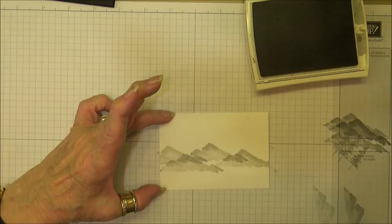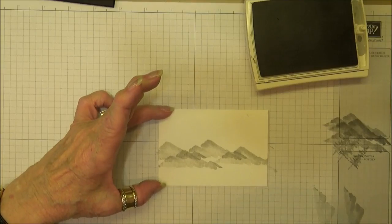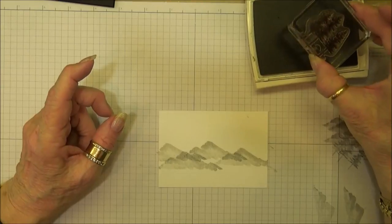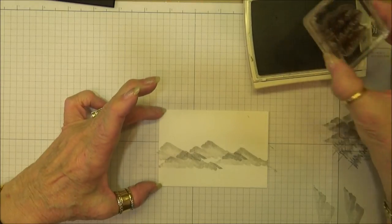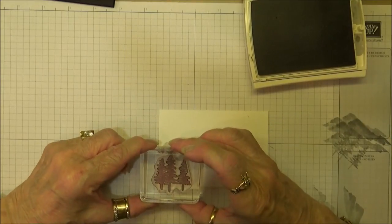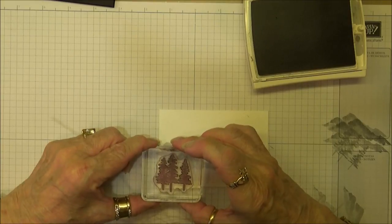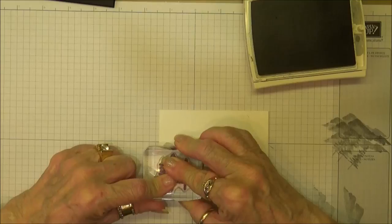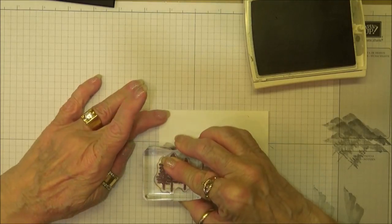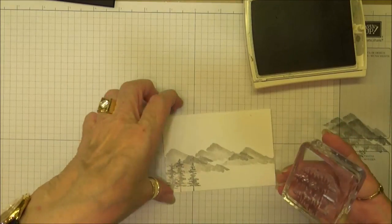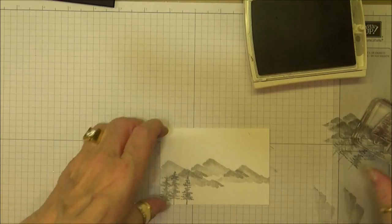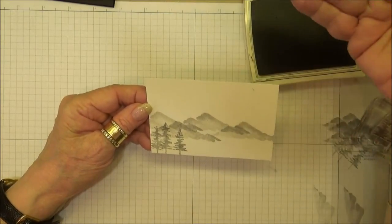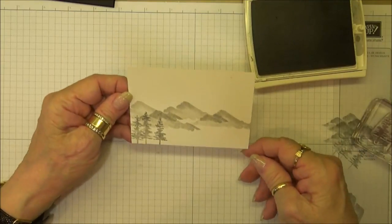The last thing we're going to do is stamp our trees. I'm just going to put those down in this corner. You'll notice I did not tap those off because I wanted them a little darker than the mountains so they appear more in the foreground.